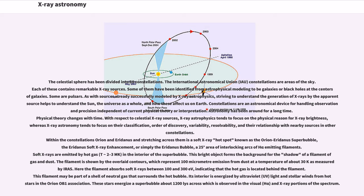The celestial sphere has been divided into 88 constellations. Each of these contains remarkable X-ray sources. Some have been identified from astrophysical modeling to be galaxies or black holes at the centers of galaxies. Some are pulsars. Striving to understand the generation of X-rays by the apparent source helps to understand the sun, the universe as a whole, and how these affect us on Earth. Constellations are an astronomical device for handling observation independent of current physical theory.